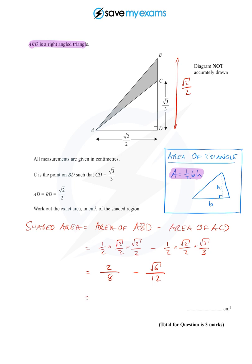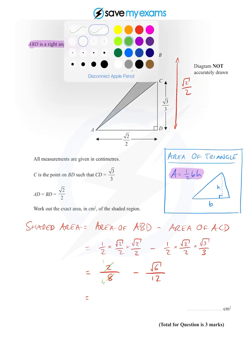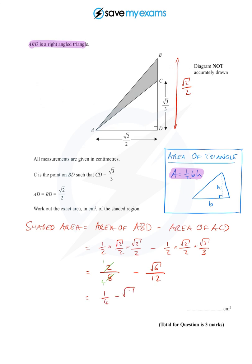And we can just simplify that a little bit. With my green cancelling pen, two over eight is one over four. And so I get a quarter minus root six over 12. And I don't think I can simplify that anymore. You can't cancel the six or the 12 because one of them is under a square root and the other isn't. And that is that.